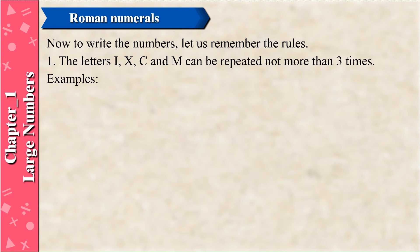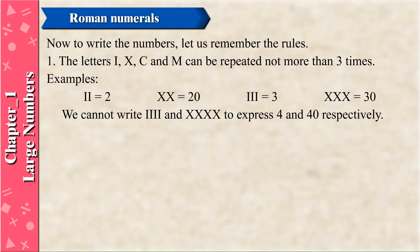Examples of the repetition rule: II = 2, XX = 20, III = 3, XXX = 30. We cannot write IIII or XXXX to express 4 and 40 respectively.